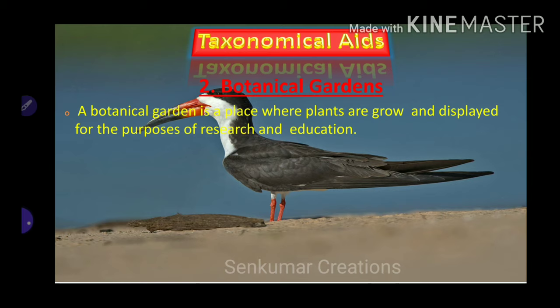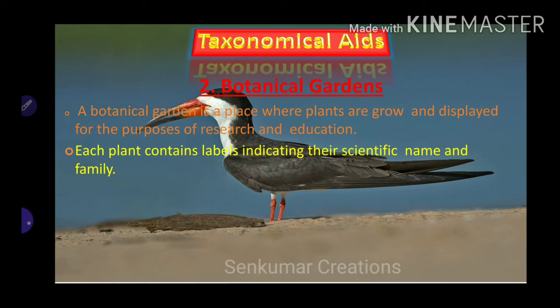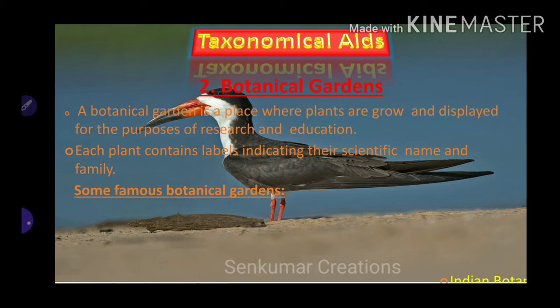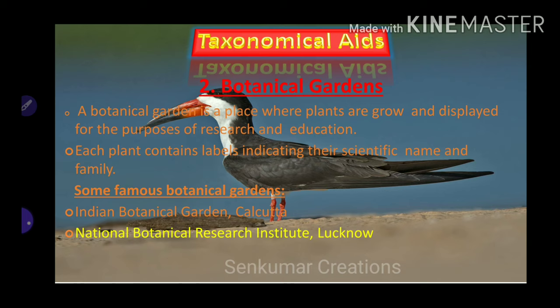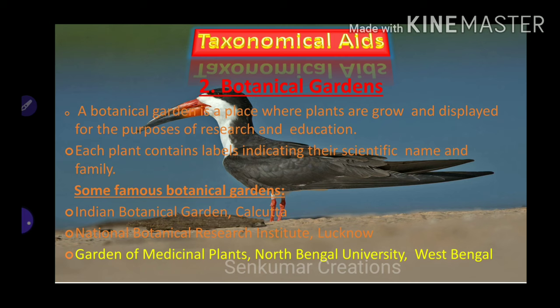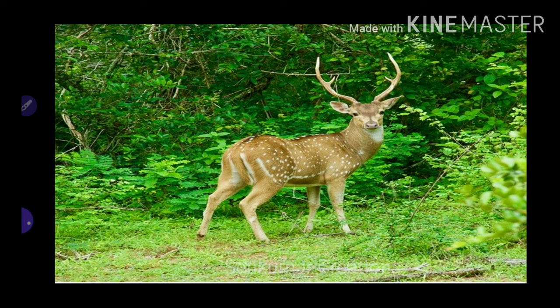Botanical gardens: a botanical garden is a place where plants are grown and displayed for the purposes of research and education. Each plant contains labels indicating their scientific name and family. Some famous botanical gardens include the Indian Botanical Garden located at Calcutta, and the National Botanical Research Institute located in Lucknow.